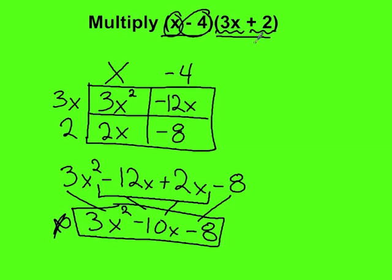We have now multiplied these two polynomials: 3x squared minus 10x minus 8. Let's do one more example.